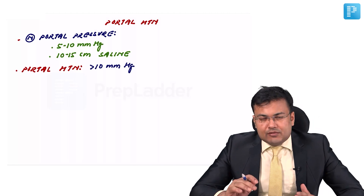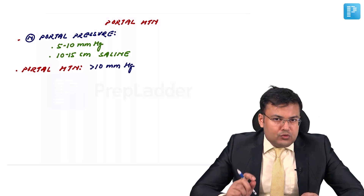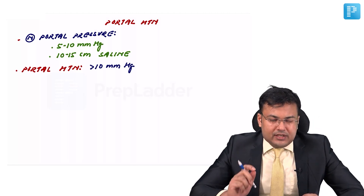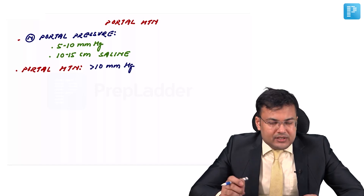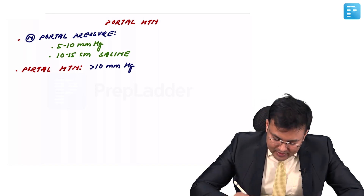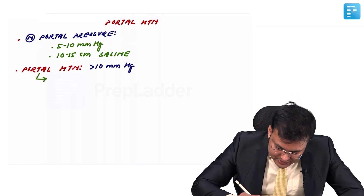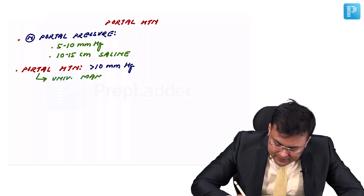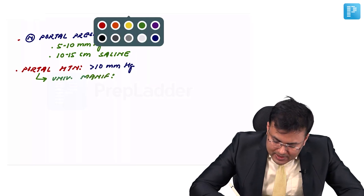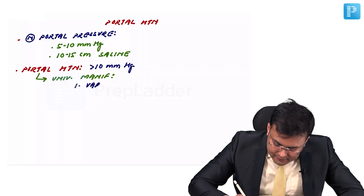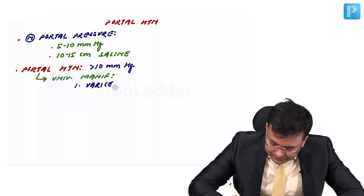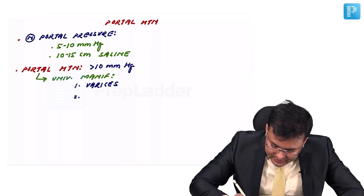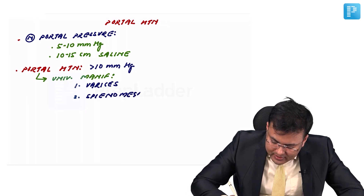There are two universal manifestations of portal hypertension — meaning seen in all patients. First is variceal formation or varices, and second is splenomegaly.